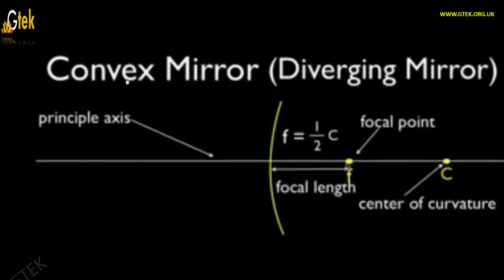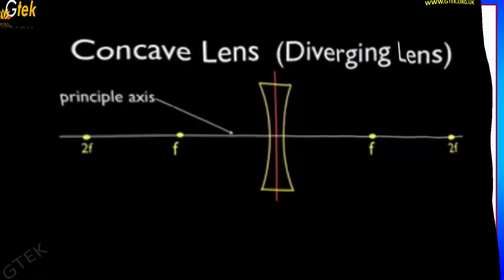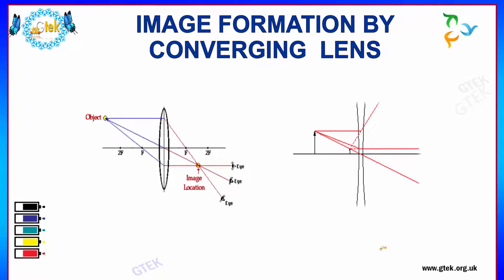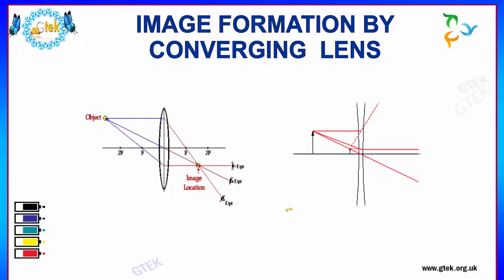This is the convex mirror, that is the diverging mirror. This is the principal axis, this is the focal length, and this is considered to be the centre of curvature. This shows the image formation by a converging lens — you can see the object and the image location, and how it is getting to be converged.